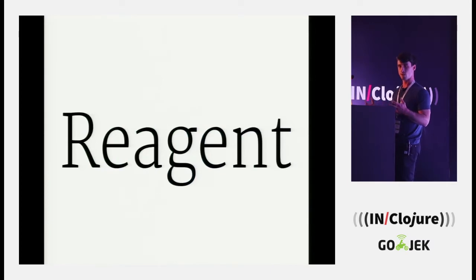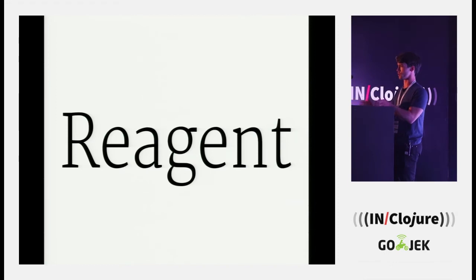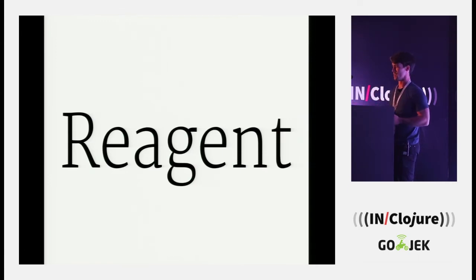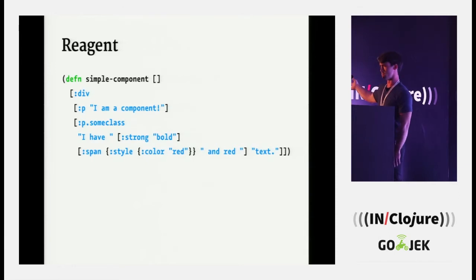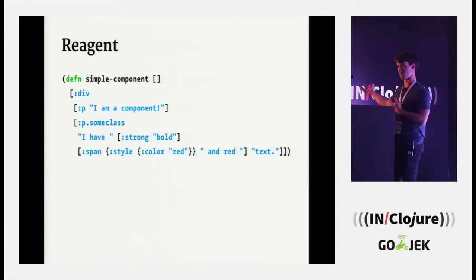The second thing is Reagent. Reagent is a minimal ClojureScript wrapper around React JS. It really lets you build UIs very efficiently, providing two main things: the ability to define React components using ClojureScript functions, and the Reagent atom — which I might call a ratom. This is a way to store state and have your components react to changes. It's about as simple a Reagent component as you can define, using Hiccup syntax with literal vector form to look like HTML.